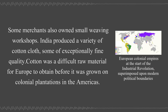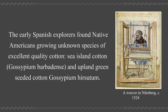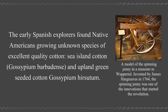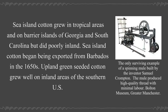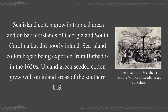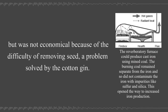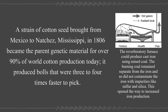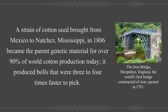Cotton was a difficult raw material for Europe to obtain before it was grown on colonial plantations in the Americas. The early Spanish explorers found Native Americans growing Sea Island cotton and Upland green seeded cotton. Sea Island cotton began being exported from Barbados in the 1650s, while Upland green seeded cotton grew well on inland areas of the southern U.S. but was not economical because of the difficulty of removing seed, a problem solved by the cotton gin. A strain of cotton seed brought from Mexico to Natchez, Mississippi in 1806 became the parent genetic material for over 90% of world cotton production today.